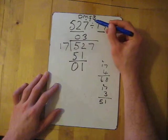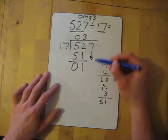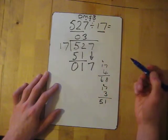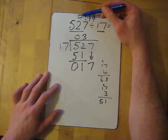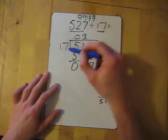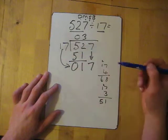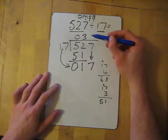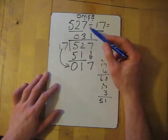We've subtracted, now we need to bring down. So we bring down the 7, and now we go back to the start. We're back at divide. So 17 into 17 obviously goes 1 time, so my answer - 527 divided by 17 is 31.